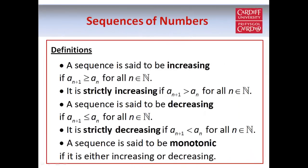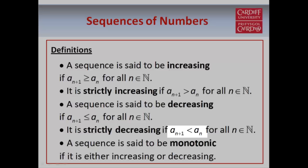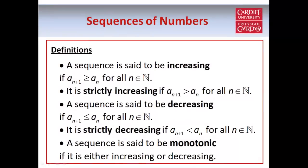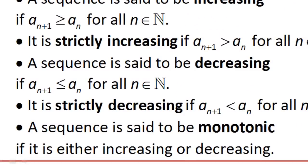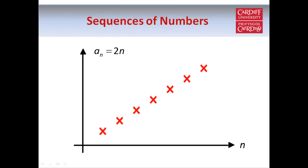Now we're going to move on to increasing and decreasing sequences. We say that a sequence is increasing if every term is greater than or equal to the term before it — that has to be true for every term in the sequence. We say it's strictly increasing if this is a strict inequality. The definitions for decreasing and strictly decreasing are similar, just with the inequality signs the other way around. If a sequence is increasing or decreasing — or both, as in the case of a constant sequence — we say it's monotonic or monotone.